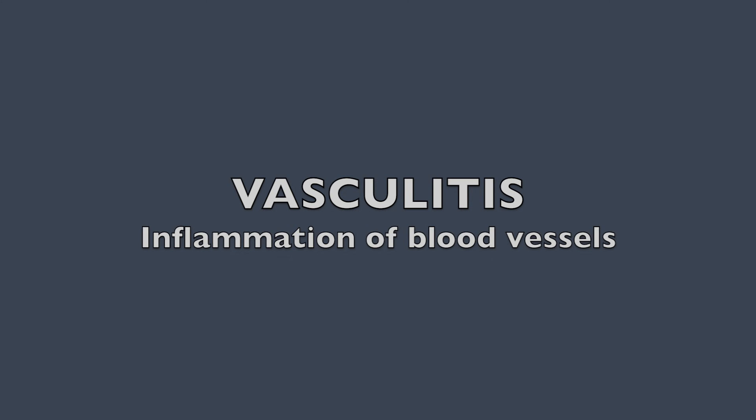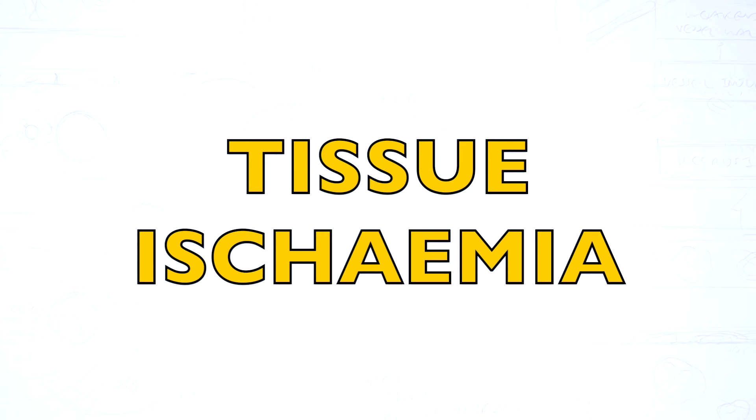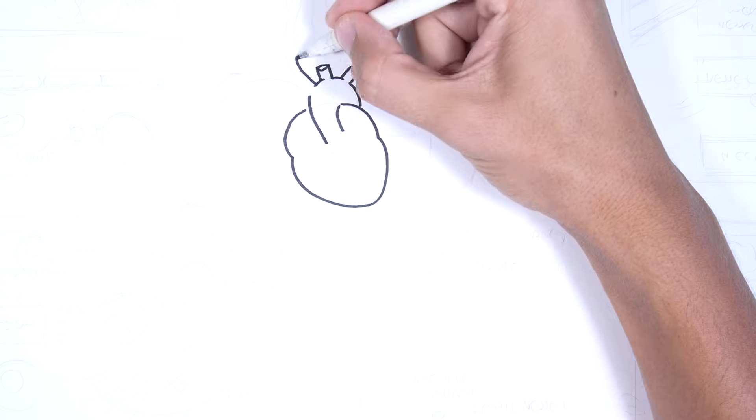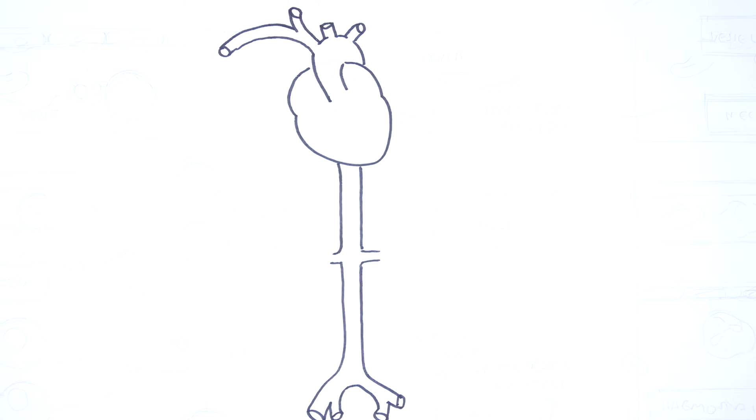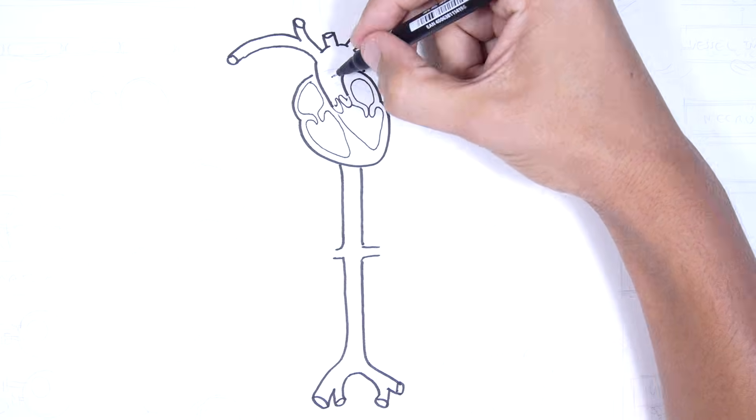Vasculitis is inflammation of the blood vessel resulting in damaged vessels leading to potential complications such as tissue ischemia or aneurysms. Vasculitis classically refers to the arteries rather than veins because the arteries are the ones that are usually affected in vasculitis.